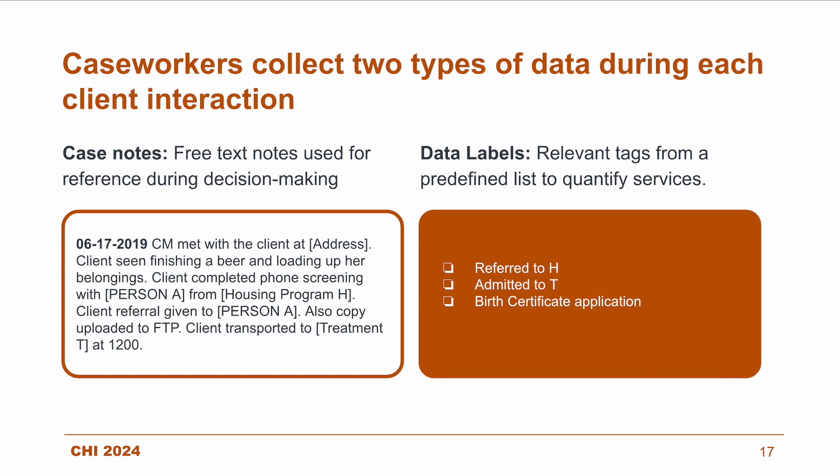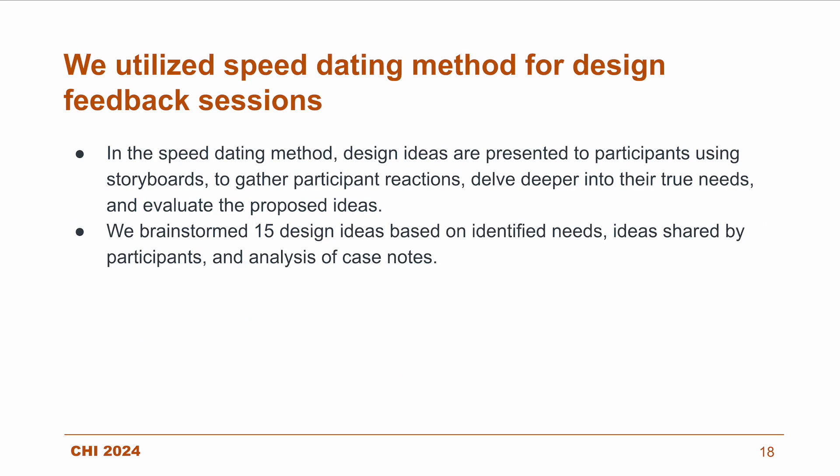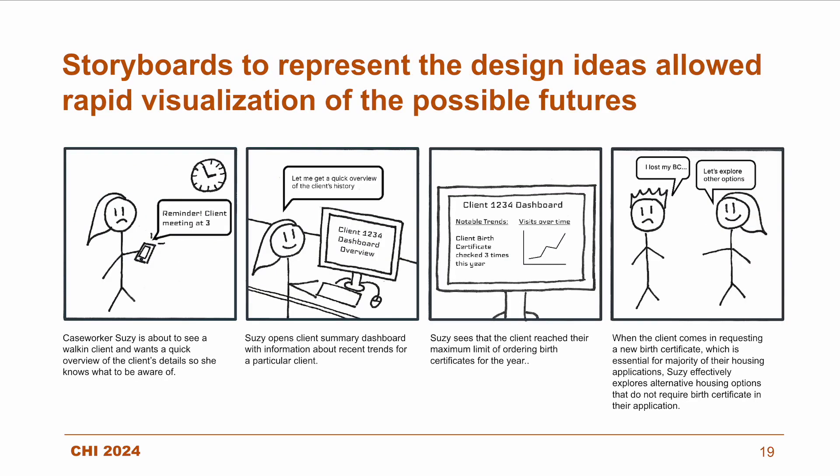In this research, we focus on the challenges with data labels as these are the primary source for performance and funding reports. We utilized speed dating methods for design feedback sessions, presenting design ideas to participants using storyboards to gather their reactions, delve deeper into their true needs, and evaluate the proposed ideas. We branched on 15 design ideas based on identified needs, ideas shared by participants, and analysis of case notes, using storyboards to allow rapid visualization of possible futures.